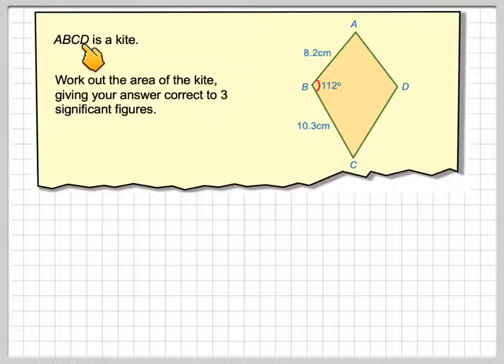A, B, C, D is a kite, so that means that this length here will be the same as this length here, this length here will be the same as this length here, these two angles will be equal, and also these two angles will be equal.